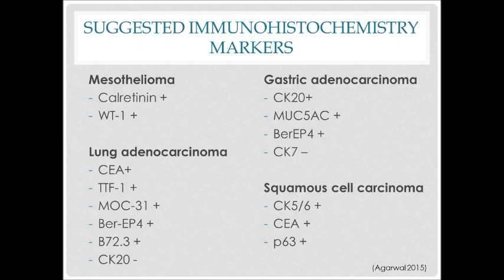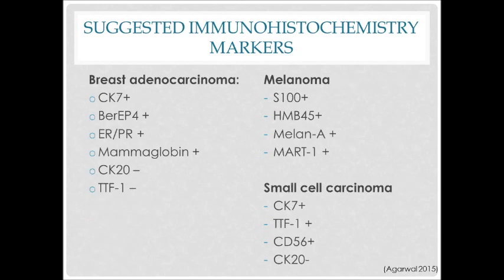Here are some more suggested markers to detect cells from mesothelioma, gastric adenocarcinoma, lung adenocarcinoma, and squamous cell carcinoma. And here are suggested markers for breast adenocarcinoma, melanoma, and small cell carcinoma. The suggested markers will specifically stain to the specific protein in the slide, allowing precise detection and diagnosis to be made.